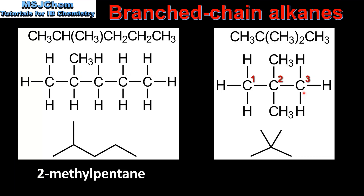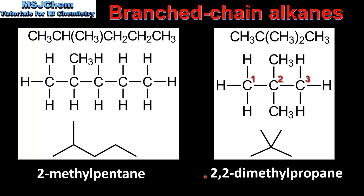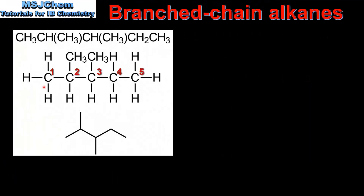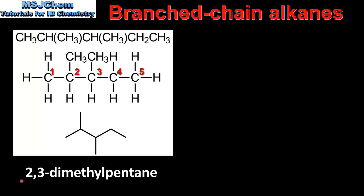In our next example the longest continuous carbon chain is 3 carbon atoms. We have two branches which are both methyl groups and both are on carbon number 2. So this molecule is named 2,2-dimethylpropane. In the next example the longest carbon chain is 5 carbon atoms. In this molecule we have two methyl groups bonded to carbon number 2 and carbon number 3. Therefore the name of this molecule is 2,3-dimethylpentane.